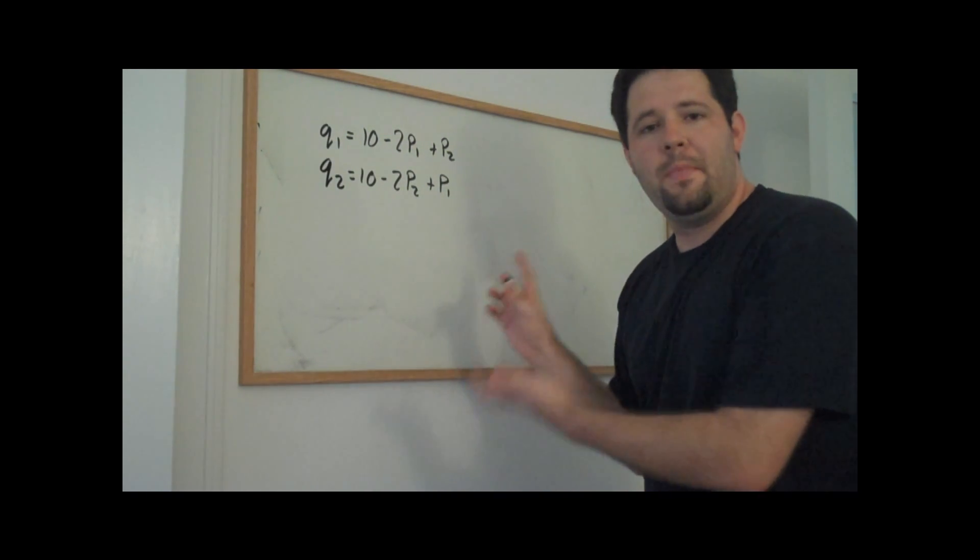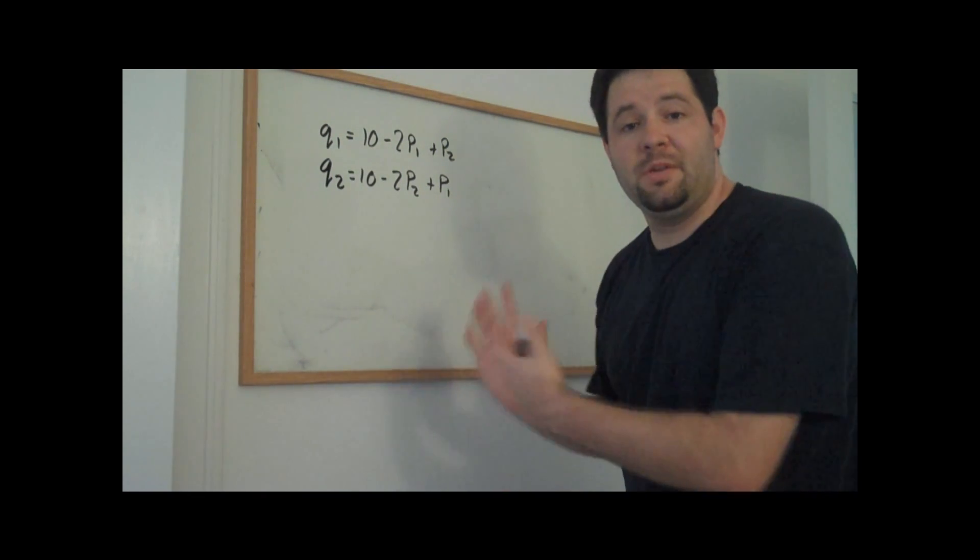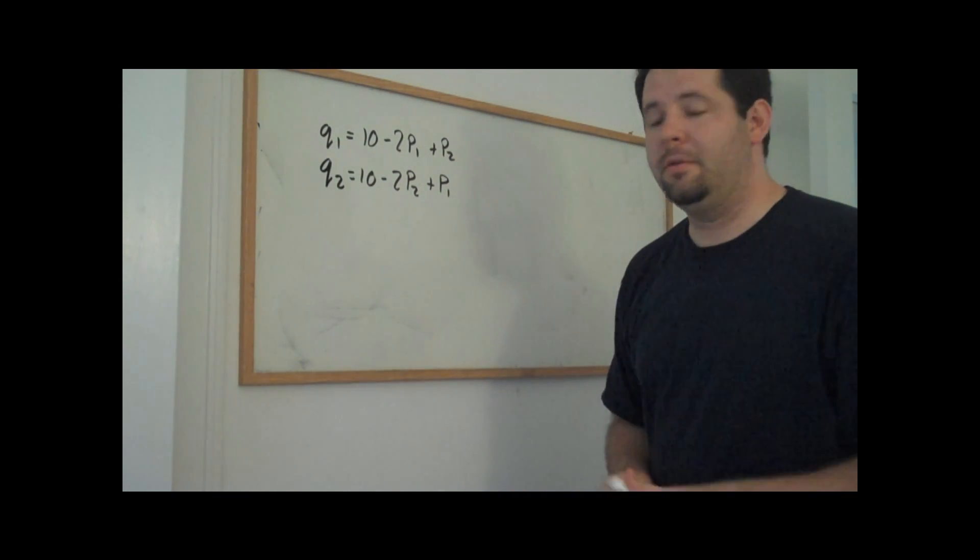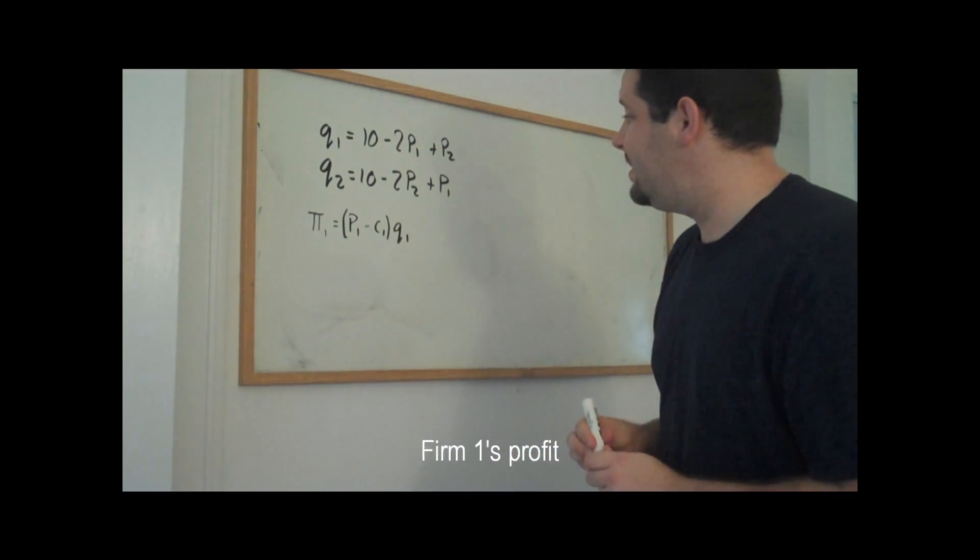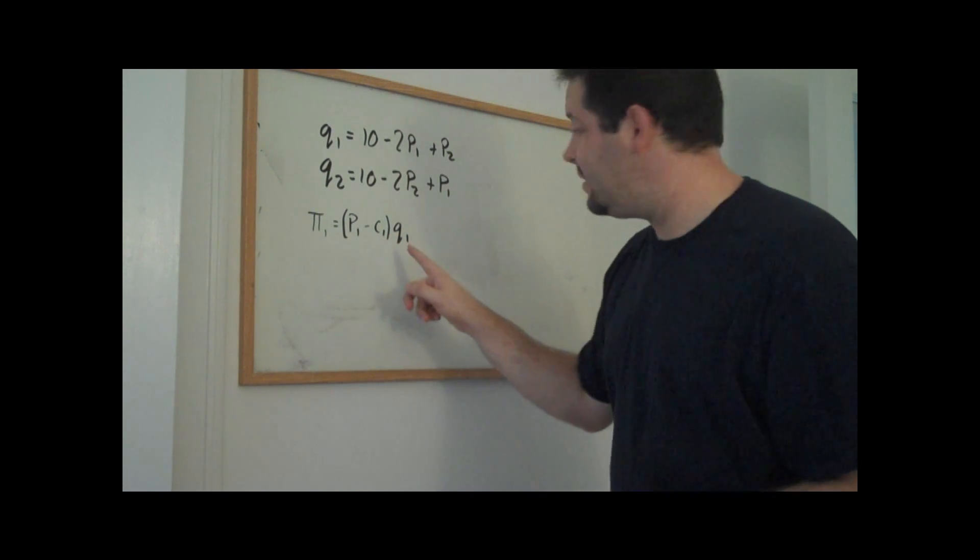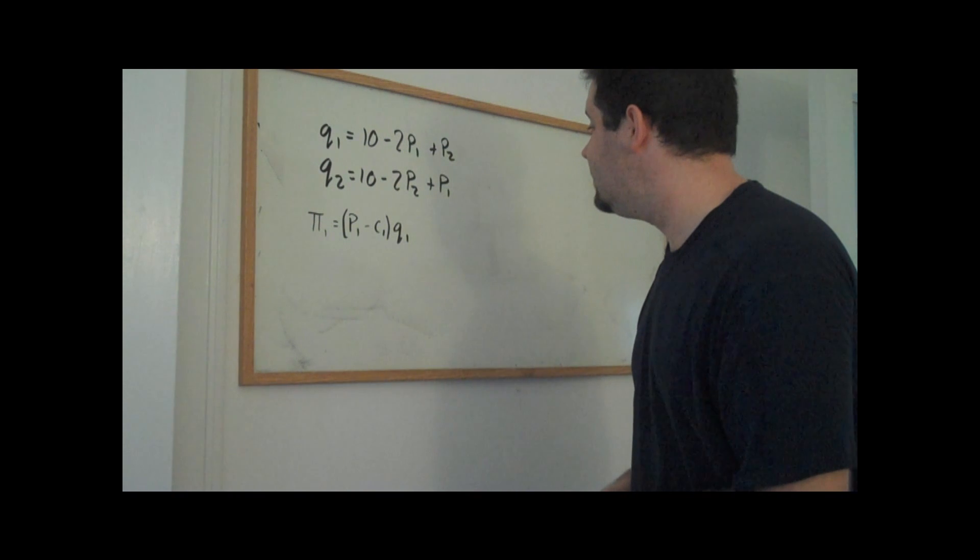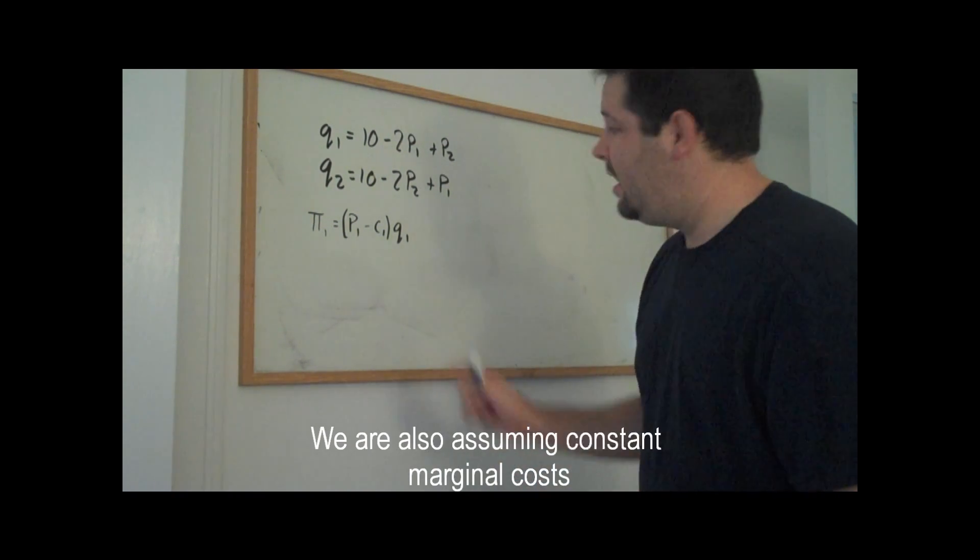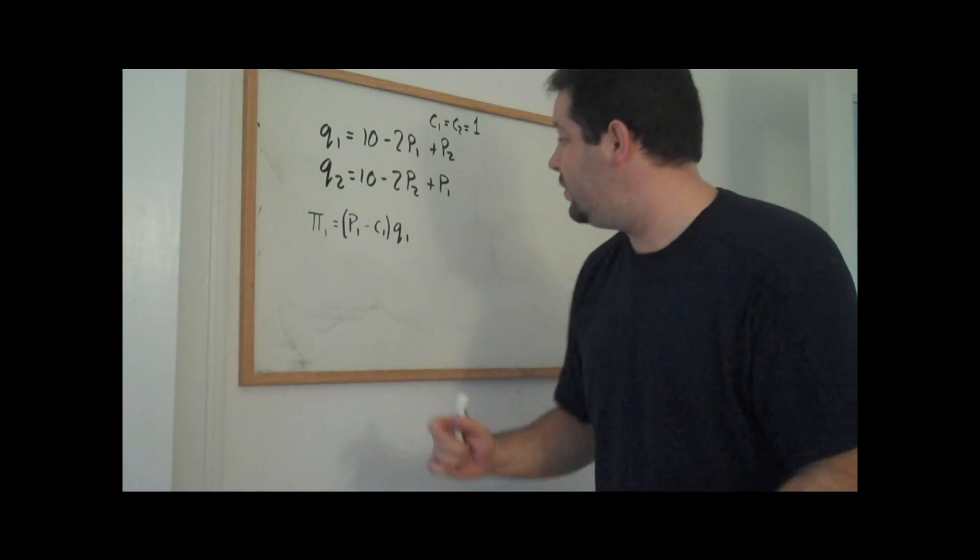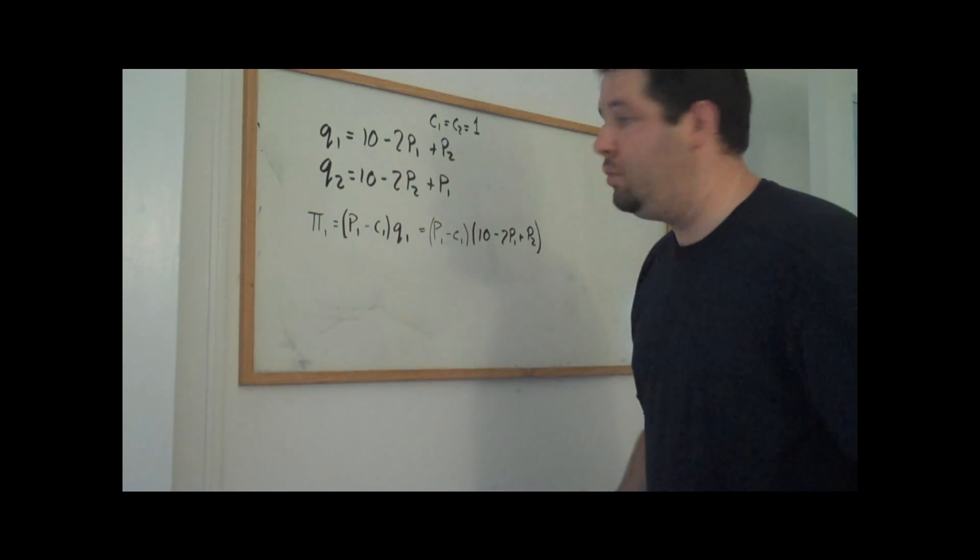And we ask ourselves, what if they pick the price instead of picking the quantity? Well, firms in price competition, just like firms in Cournot competition, maximize profit. So here's firm one's profit. This is the markup of the price minus the marginal cost times the quantity. Here we're assuming that there are no fixed costs. And let's assume that both firms face constant marginal cost of one dollar per unit. The next thing we can do is go ahead and plug in for this quantity. So this is profit as a function of the two prices.